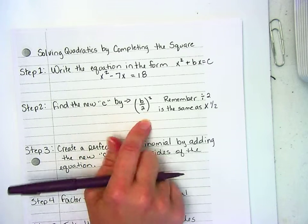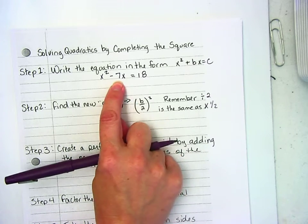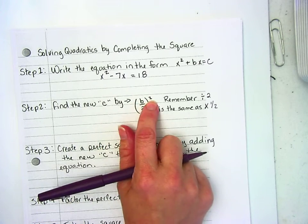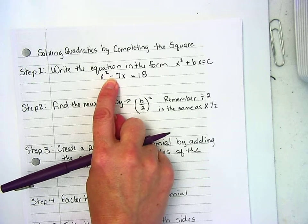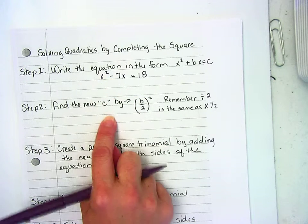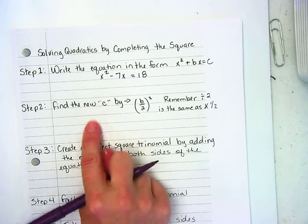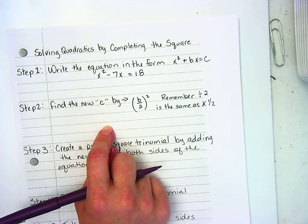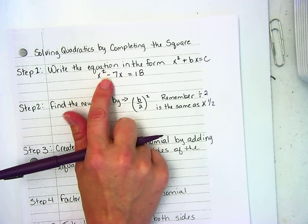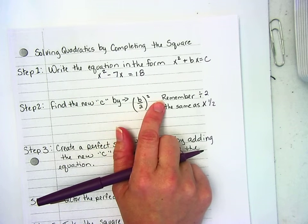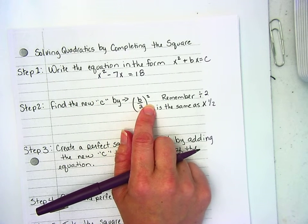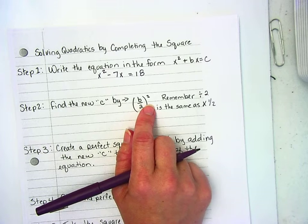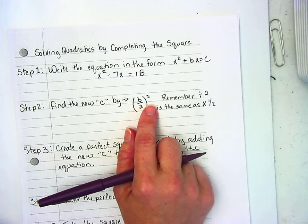I need to find my new C by taking B and dividing it by 2 and squaring it. So what about that negative? Do I need to bring the negative in to that situation? No matter what, if you bring it in, you're going to end up with a positive because you're taking negative 7 and squaring it. Negative 7 times negative 7, it's going to give me a positive answer. So I don't even need to worry about that negative sign right now.